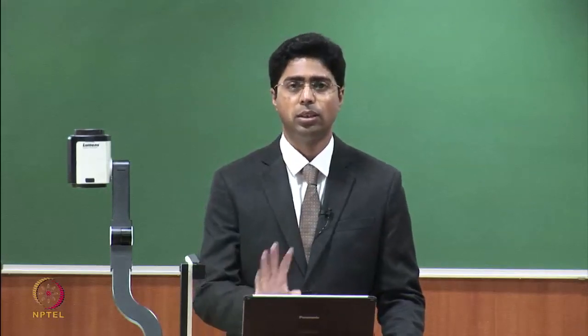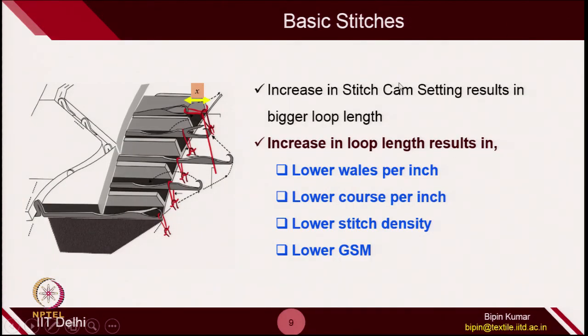Let's summarize this particular experiment. I expect anyone listening to this lecture who has access to a machine to go and make fabrics with different loop lengths and observe this variation. In summary: when you increase the stitch cam setting, it results in bigger loop length. Bigger loop length results in lower wales per inch, lower courses per inch, lower stitch density (fewer loops per unit area), and a lower GSM. Loop length significantly affects the fabric structural characteristics. This is the basic testing on knit fabrics. In the next lecture, I am going to go for more complicated designs and change the stitches. Stay tuned — thank you very much.